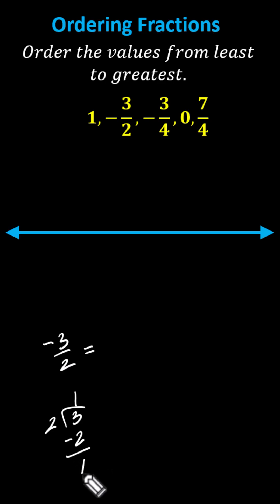1 times 2 is 2. We subtract. The remainder is 1, indicating the quotient is 1, and the fraction is the remainder over the divisor, indicating negative 3 halves equals negative 1 and 1 half.